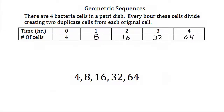So we would have to multiply 4 by 2 to get 8. And if we multiply 8 by 2, we would get 16. If we multiply 16 by 2, we get 32. And if we multiply 32 by 2, we get 64. So this is a geometric sequence because every number in the sequence is multiplied by 2, or twice as big as the previous number.